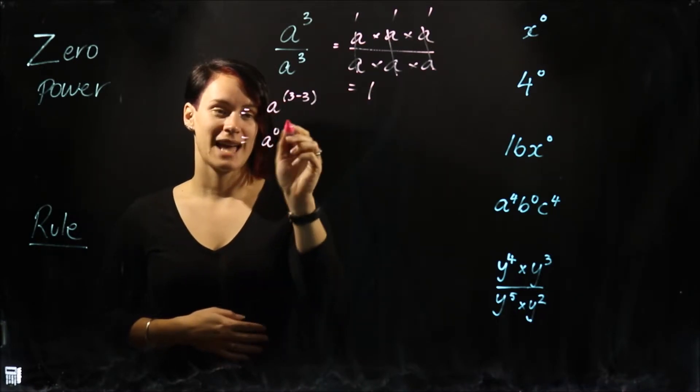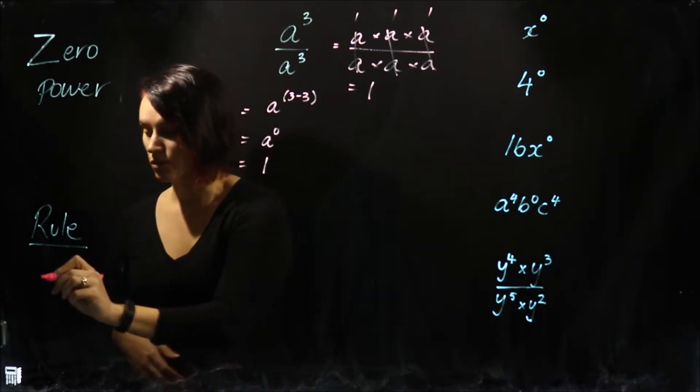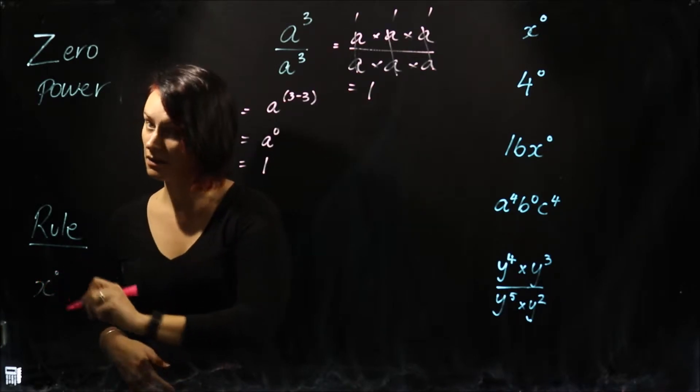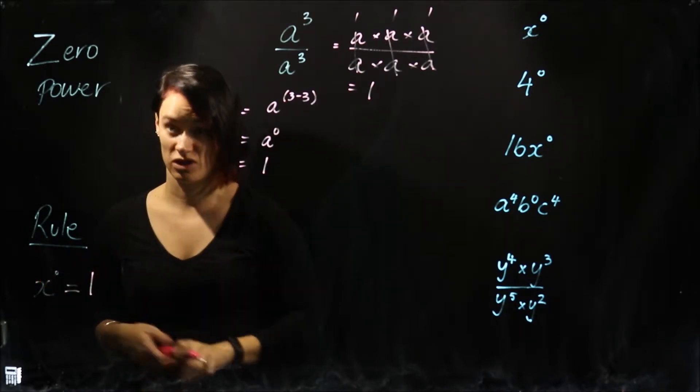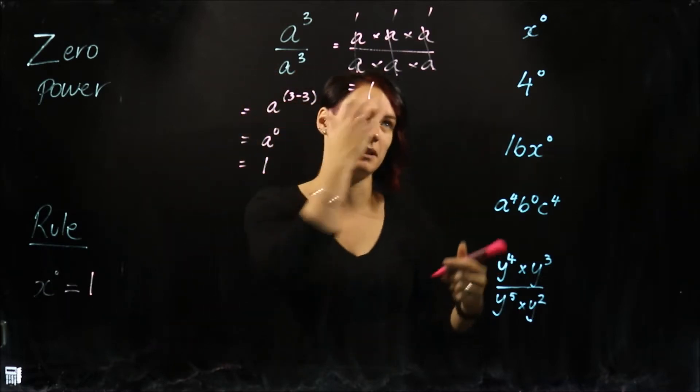So what we can say now is A to the power of zero equals one. And that's our rule. Anything to the power of zero is equal to just one. There's nothing fancy to it. That's as simple as it gets.